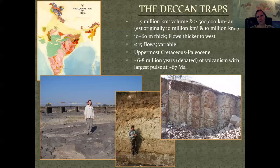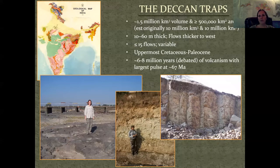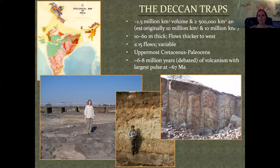Now we're going to talk about the Deccan Traps, which was my area of research. I'm not a volcanologist, so mostly I was looking at the fossils. The Deccan Traps are called traps — or 'ghats' in Hindi — meaning step-like, because the series of flows and erosion in between makes it all appear like it's stepping towards the ocean. Currently there's about 1.5 million cubic kilometers of volume of basalt and about 500,000 square kilometers of area that the Deccan covers, but estimates go up to 10 million of both, which would be enormous.